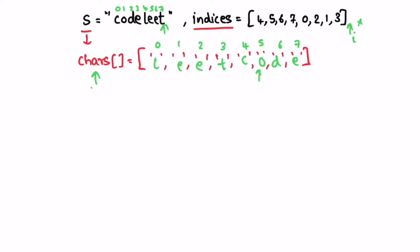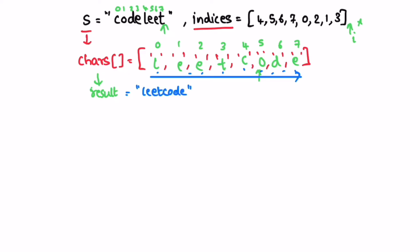We convert this character array into a string. We create a string variable result and iterate through the character array from left to right, accessing one character at a time and using a for loop to insert it into the string. This gives us the final output string.